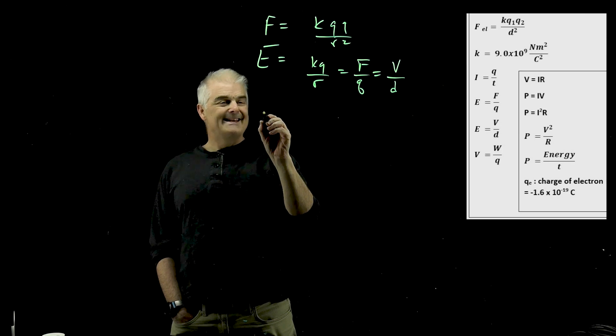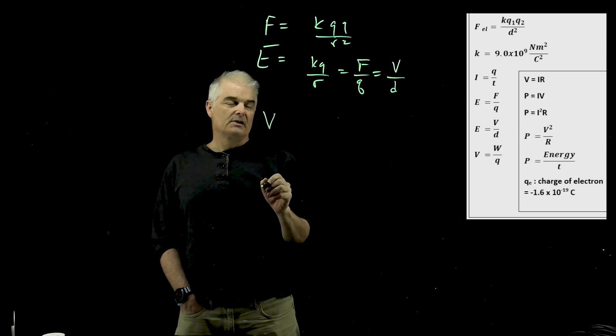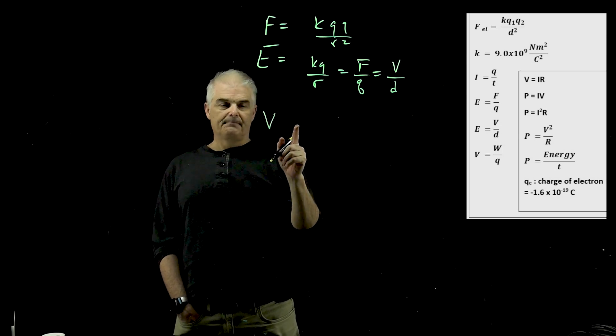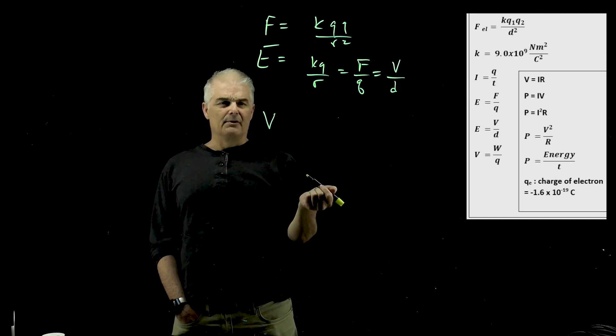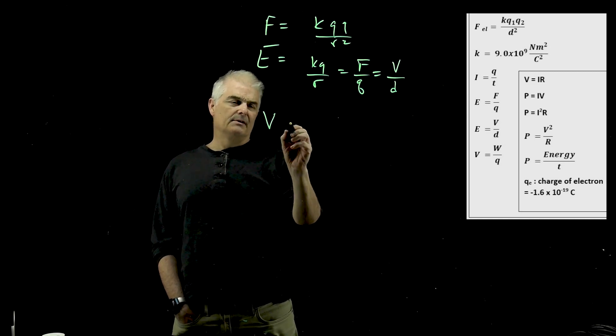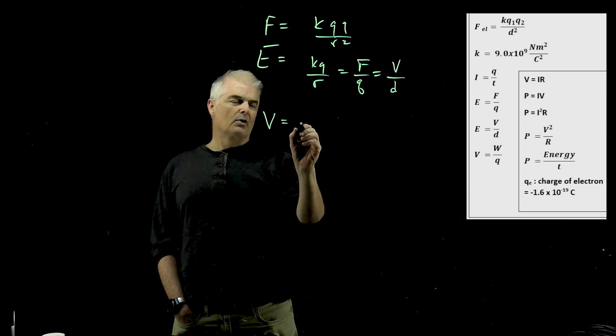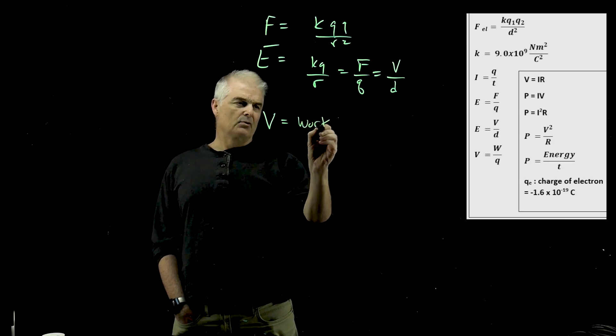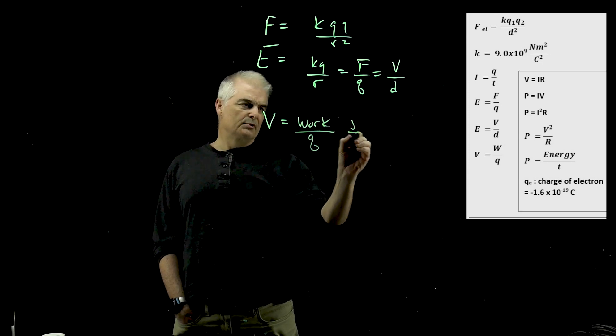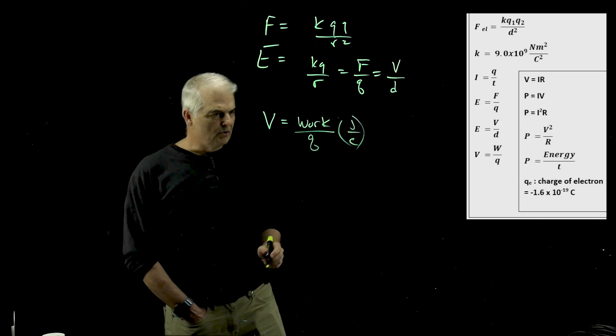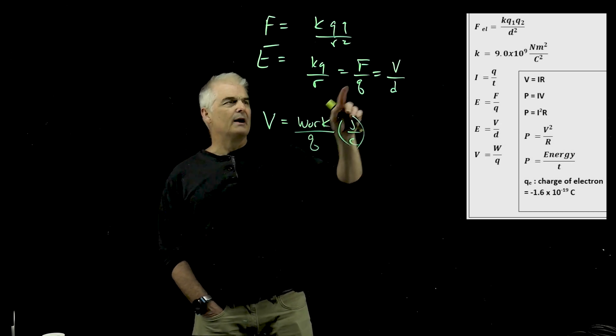So electric field can be anything. And then the electric potential, that's the volts. I didn't do electric potential energy. But the volts is a number of things. But volts is the work over the charge. So that's going to be a joule per Coulomb, is a volt.